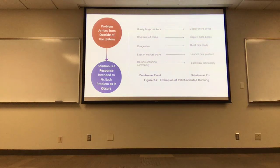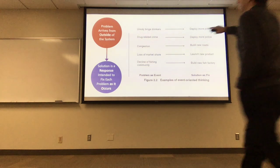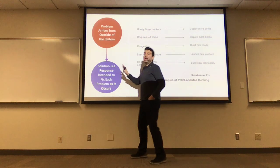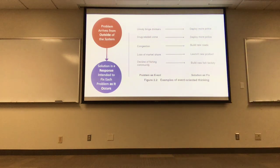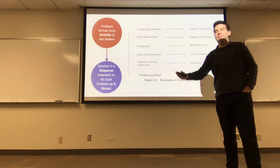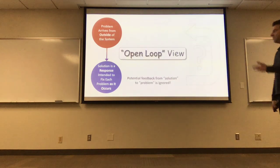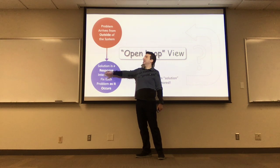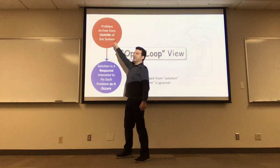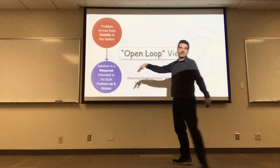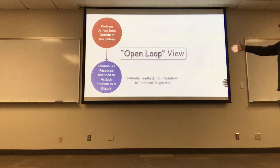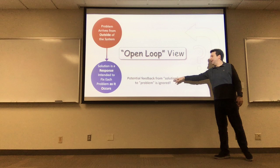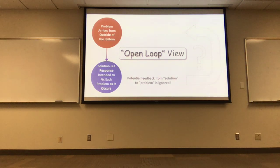These are all short-term fixes, which may or may not work. Most likely they're going to work more in systems where the problem truly does arrive from outside the system. But the threat here is that maybe the problem is more internal. If we take this approach as opposed to the endogenous approach, we might be overlooking something. This is also referred to as the open-loop view — the assumption that our system just lives here and the problems arrive at it. But if you include the solution and the problem as part of a larger system, you close the loop. The potential feedback from the solution to problem is ignored. We'll use these phrases interchangeably: event-oriented or open-loop perspective.